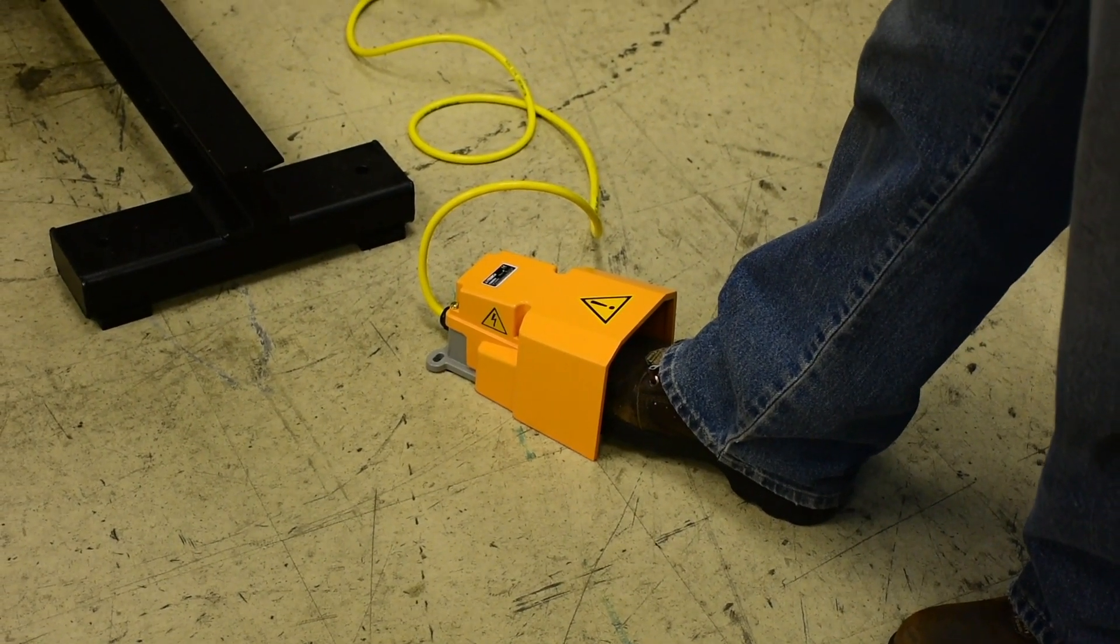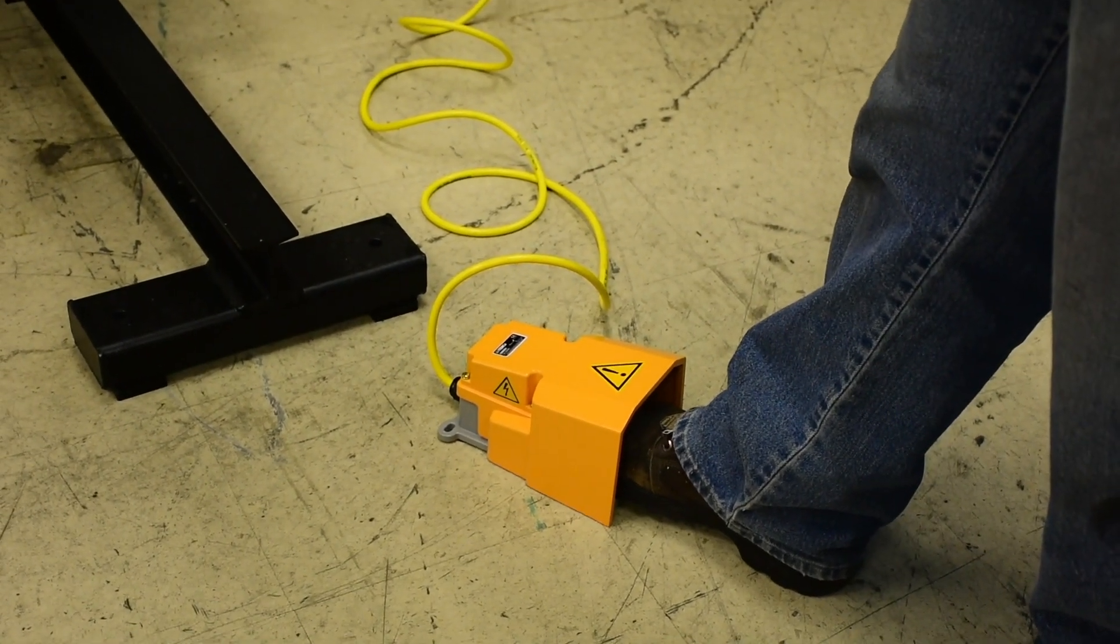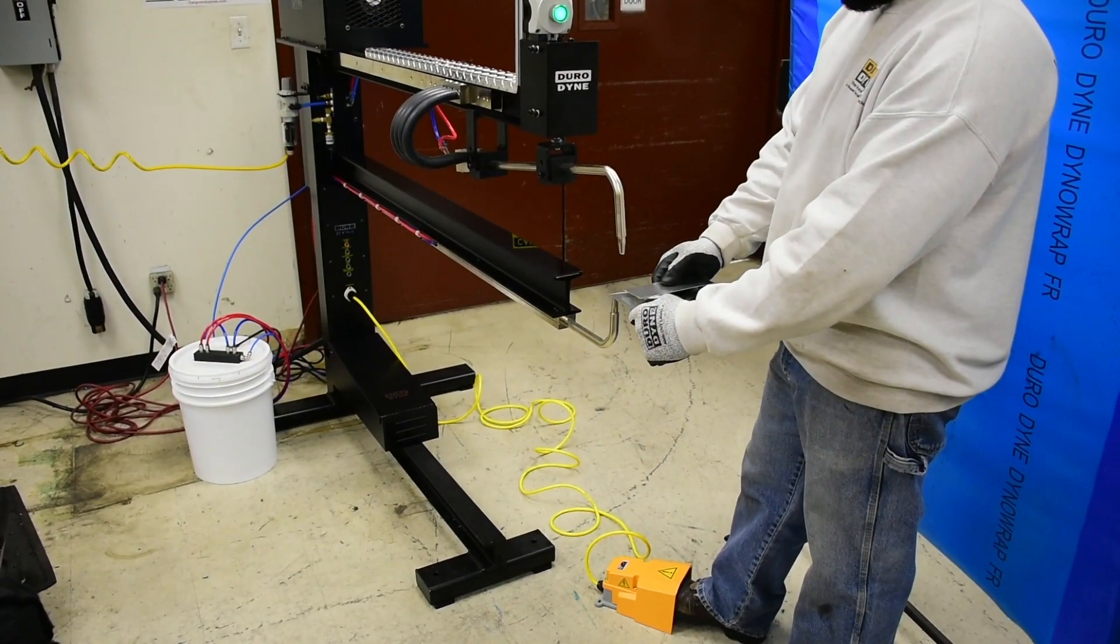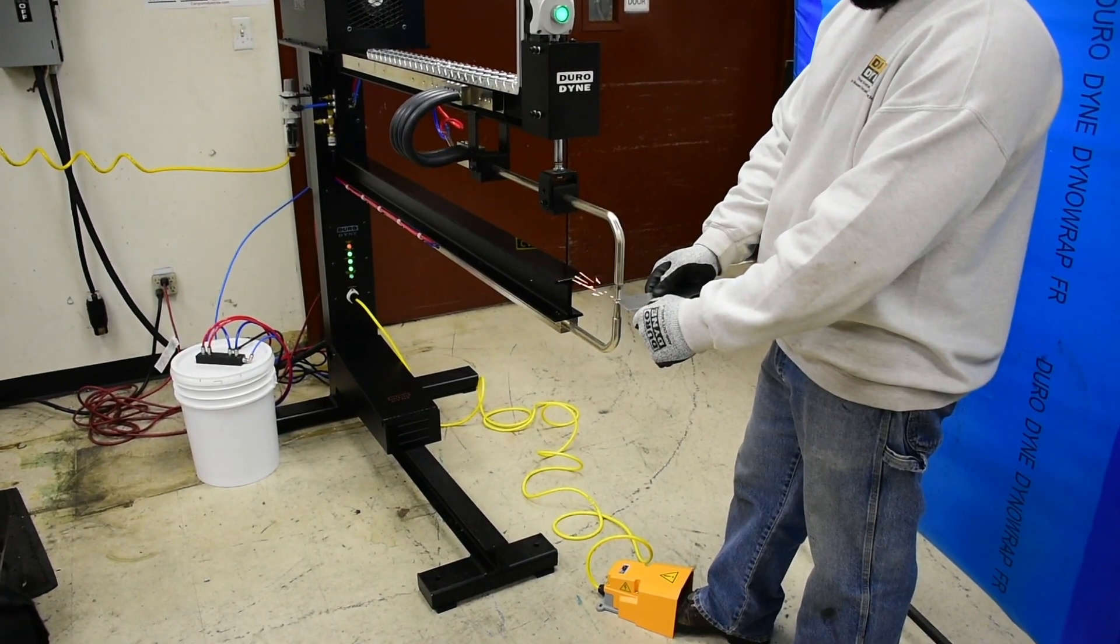Operated via an electric foot switch, the pneumatic arm applies the correct amount of pressure to your project and initiates the adjustable timer. The operator can release the foot switch at any time to stop the cycle.